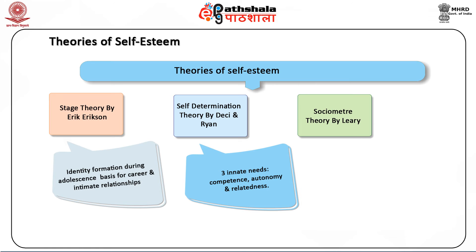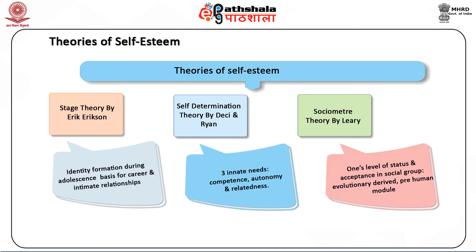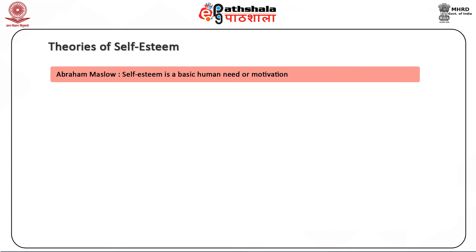The sociometer theory by Leary maintains that self-esteem reflects one's level of status and acceptance in one's social group. Leary suggested the sociometer is an evolutionarily derived pre-human module that aids an organism in monitoring its relational value. Abraham Maslow suggested that self-esteem is a basic human need or motivation, and included self-esteem in his hierarchy of needs.